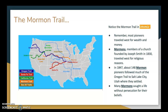Then we have the Mormon Trail, shown in orange. The Mormon Trail overlaps the Oregon Trail for a portion but branches off and ends in Salt Lake City. Most pioneers traveled west for wealth and money, but the Mormons — members of a church founded by Joseph Smith in 1830 — traveled west for religious reasons. In 1847, about 148 Mormon pioneers followed much of the Oregon Trail to Salt Lake City in Utah, the capital of Utah, where they settled. Many Mormons sought a life without persecution for their beliefs. To this day, there are more Mormons in Utah than any other state.